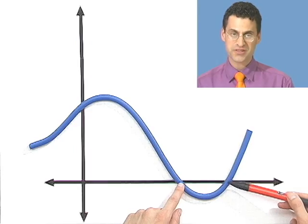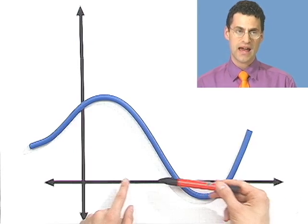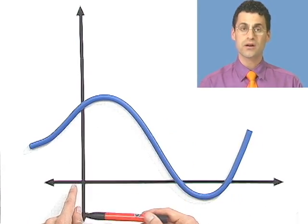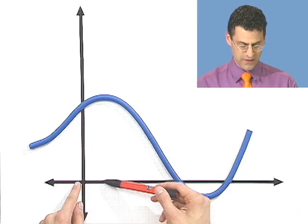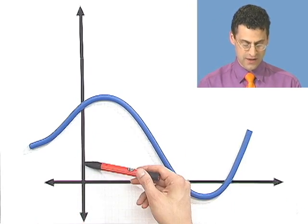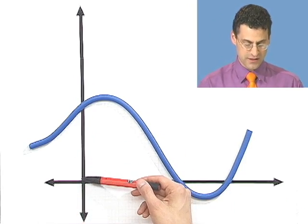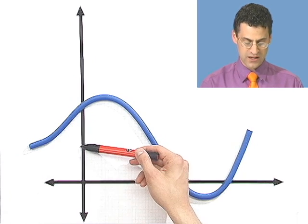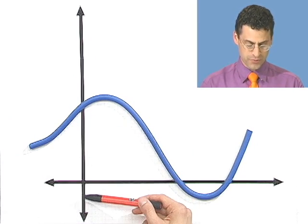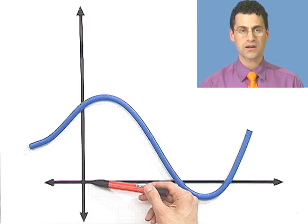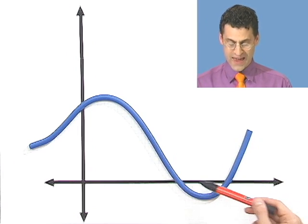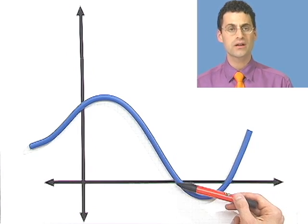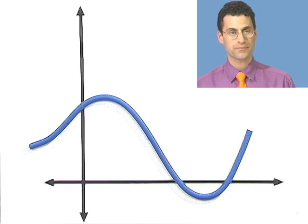How would you find the x-intercepts? Notice the x-intercepts happen at a location where y is 0. This is along the x-axis, and all these points have the property that y equals 0. So if we find for what values of x does y equal 0, that will locate these points.